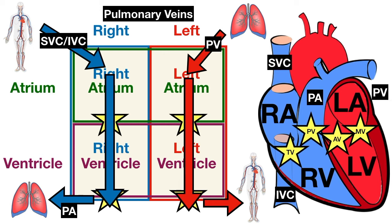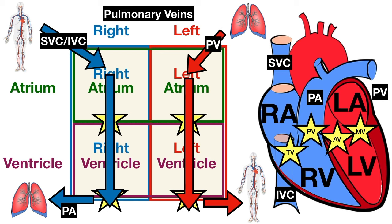The pulmonary veins carry oxygenated blood from the lungs to the left atrium. They're easy to remember because they carry blood from the lungs — 'pulmonary' — and blood vessels carrying blood to the heart are veins. The pulmonary veins are unique in that they carry oxygenated blood. Finally, the aorta is responsible for delivering oxygenated blood from the left side of the heart to the rest of the body.